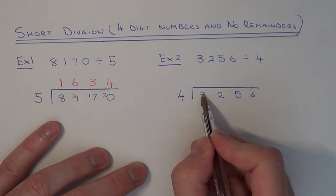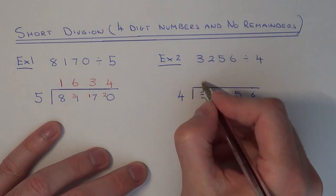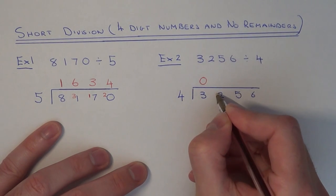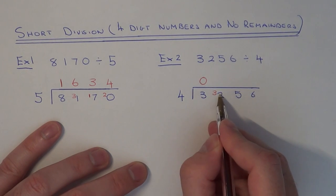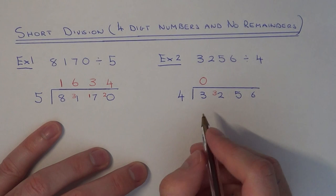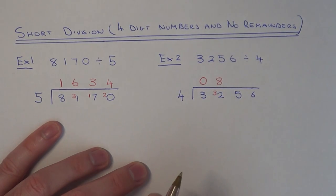First of all, we do 3 divided by 4. We can't do this, so it will be 0 with a remainder of 3. Next we have 32 divided by 4. This goes 8 times and there's no remainder on this.